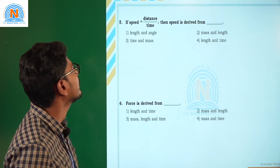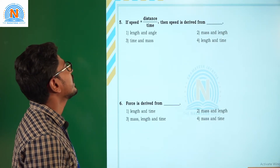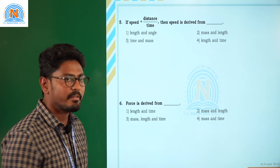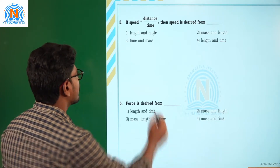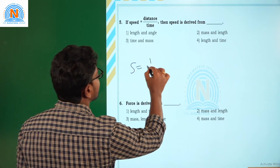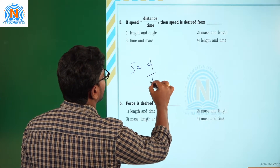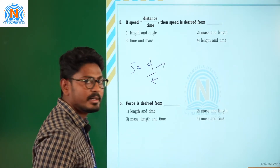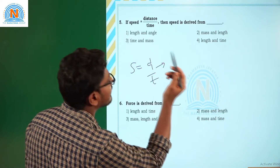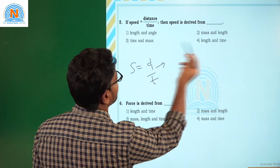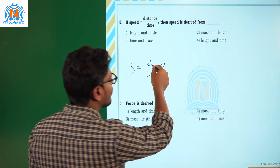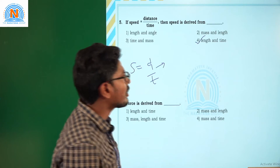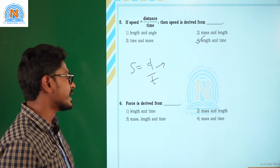Next: if speed equals distance upon time, then speed is derived from — ? Speed is defined as distance upon time. Distance is nothing but length, and time is given directly. So speed is depending upon length and time, and the correct option is length and time.